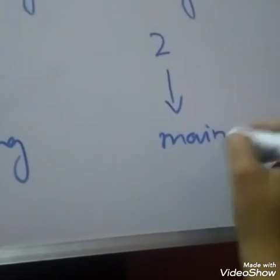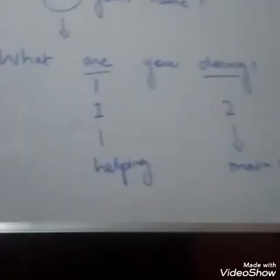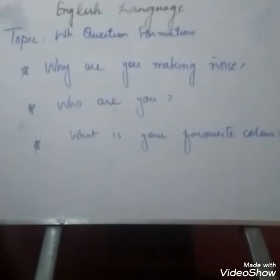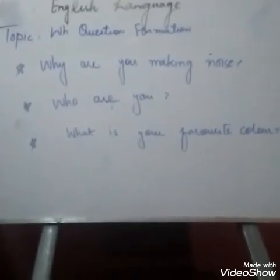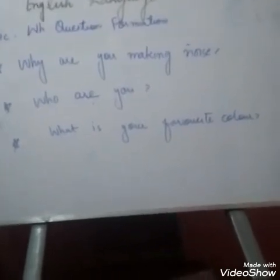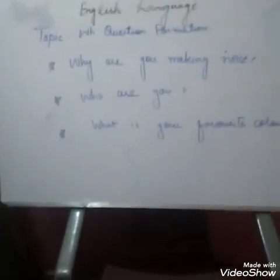In 'What are you doing?' — 'are' is the helping verb and 'doing' is the main verb. Hope you understand. Now let's take more examples: 'Why are you making noise?', 'Who are you?', 'What is your favorite color?' Hope you understand this topic. Your homework is to do page number 7 of the activity book. If you have any type of problem, you have to ask.